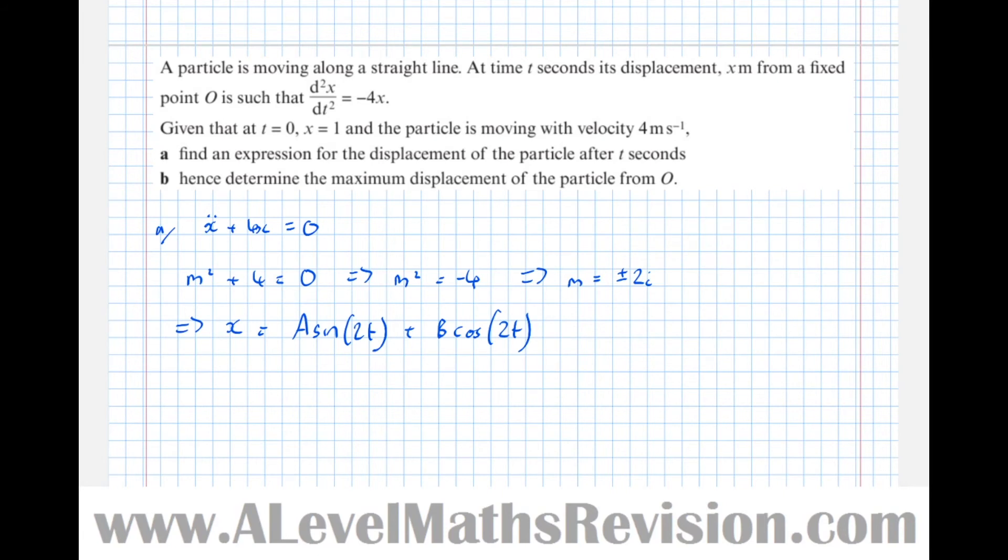We're given that at t equals 0, x is 1. So let t equals 0, x equals 1 and substitute it into that equation, which means that 1 equals a sine 0 plus b cos of 0, which means that b equals 1. So now we can write that a little bit better: x equals a sine of 2t plus cos of 2t.